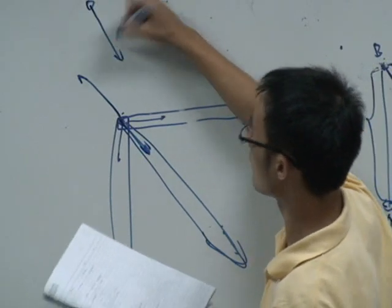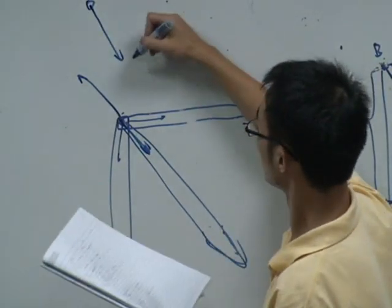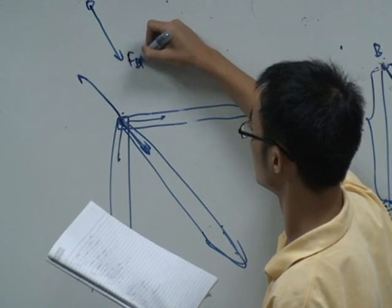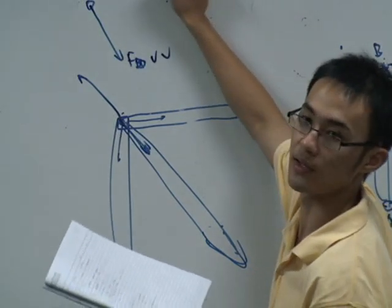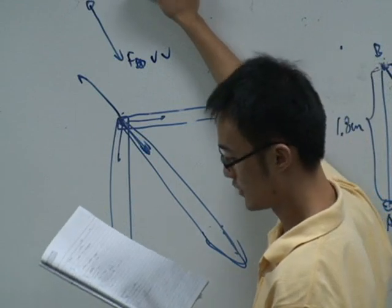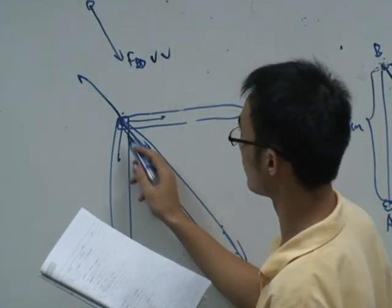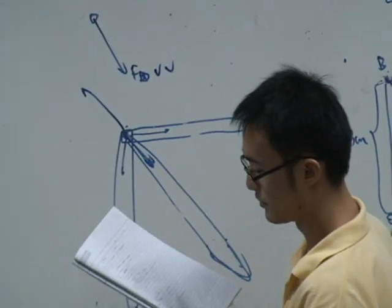So in another way around, we can see that it's this joint trying to push this, or this bar trying to push this joint in here. So this link, we have one force here which is FBD. We know both its direction and its magnitude, right?